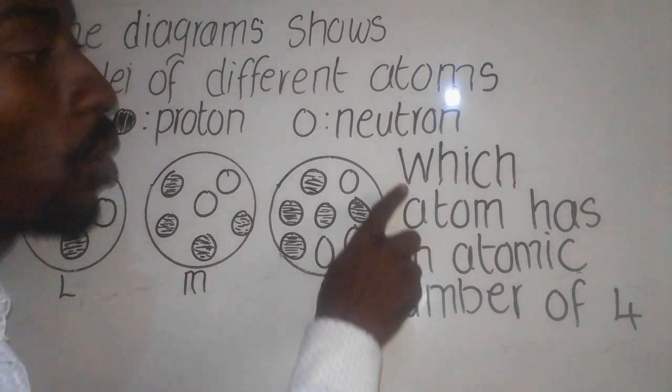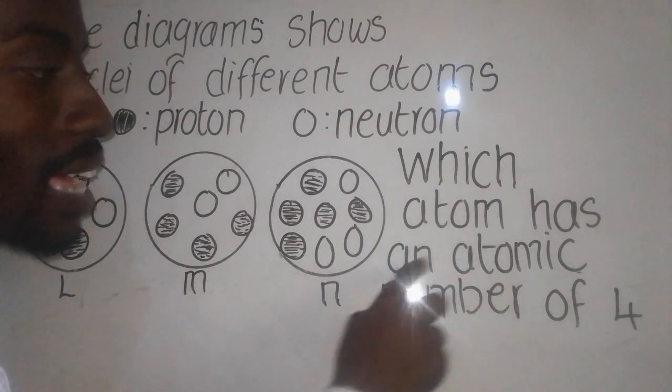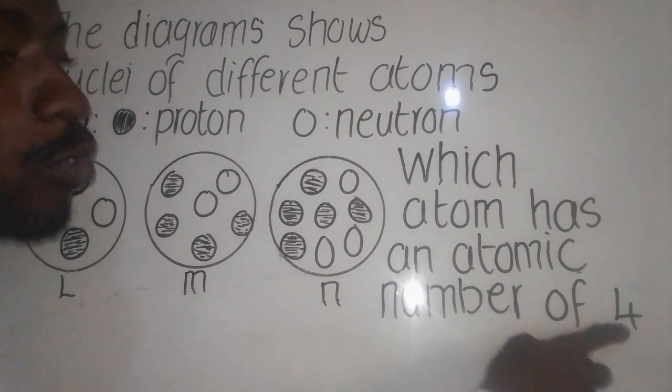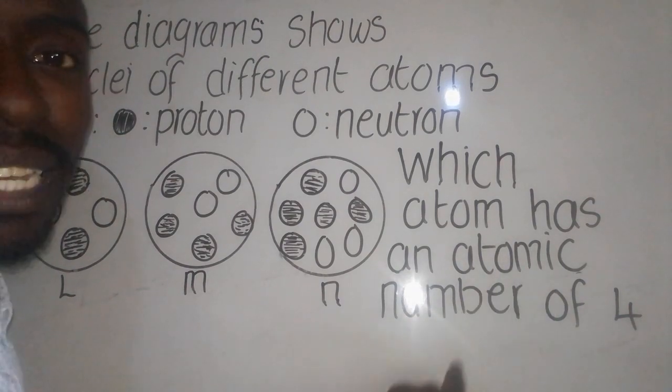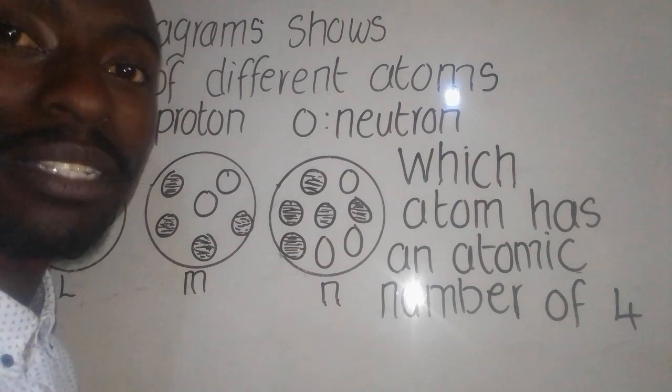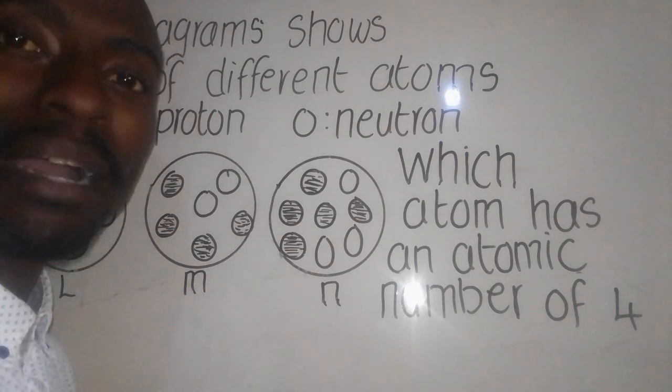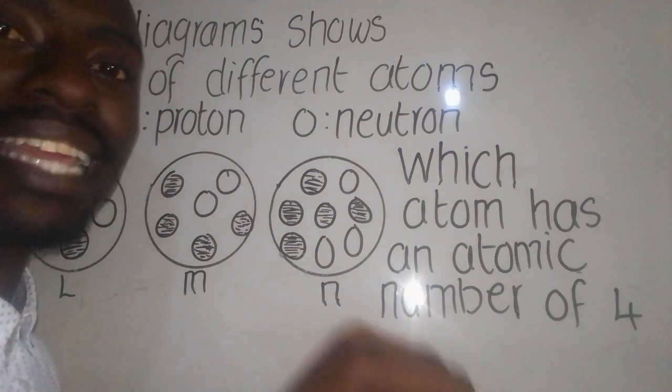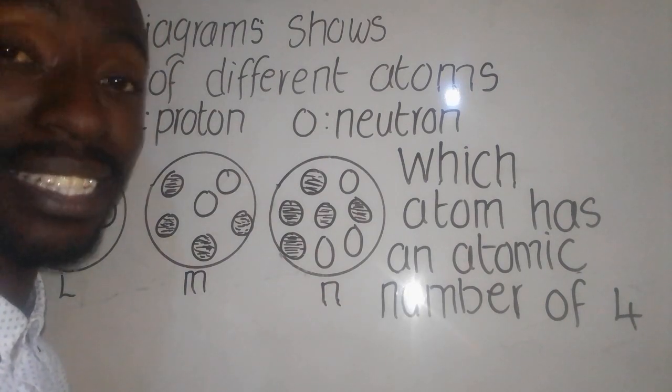You need to understand that the question is asking which atom has an atomic number of four. When they say atomic number, it is also known as the proton number, meaning the number of protons in any atom or nucleus.